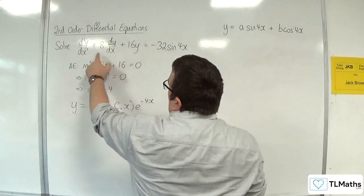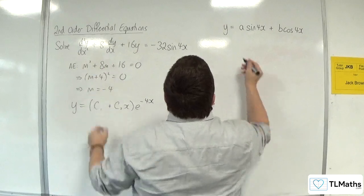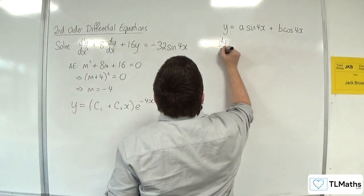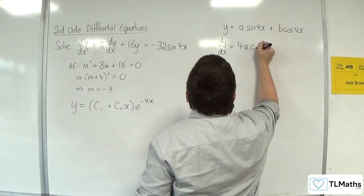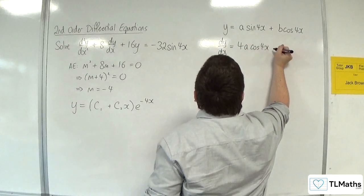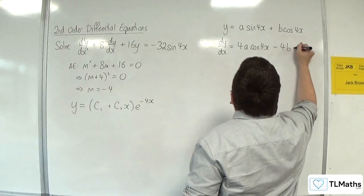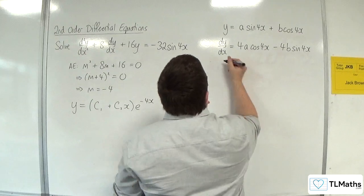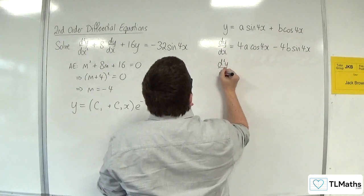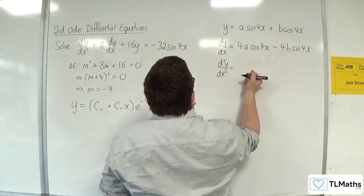Now for this I need to find dy/dx and d²y/dx². So dy/dx would be equal to 4a cos(4x) - 4b sin(4x).